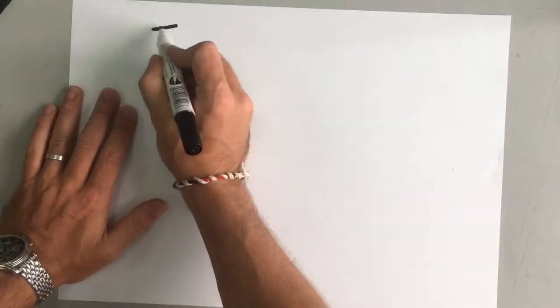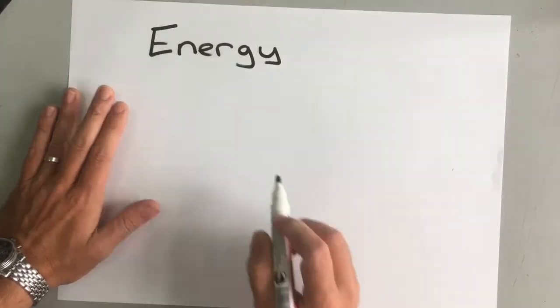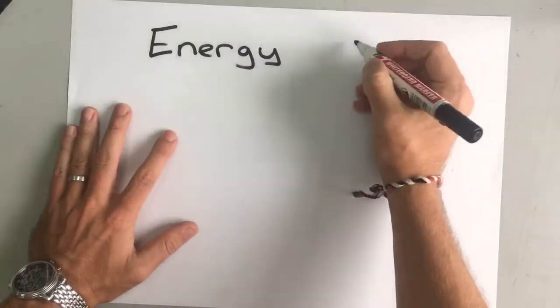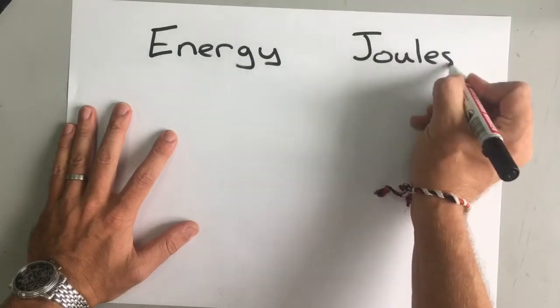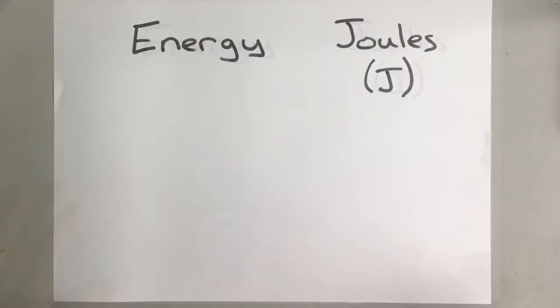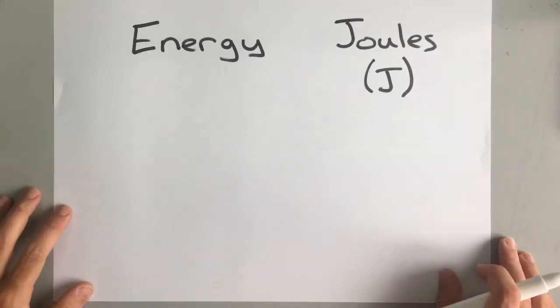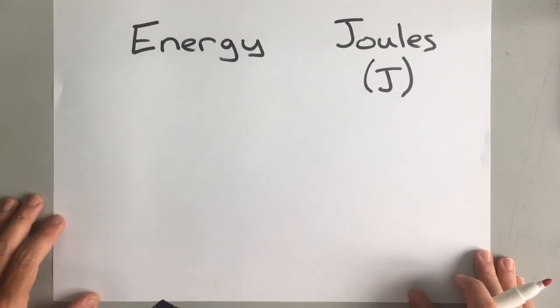Energy. You've all heard the word energy. What is energy? Well, there are lots of different types of energy and all of them are measured in joules. Okay, and we use a big capital J for joules. Now there are ten different types of energy and I'll tell you them all and I'll give you examples of each one.